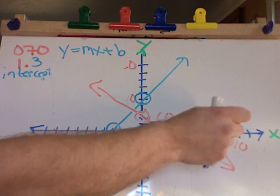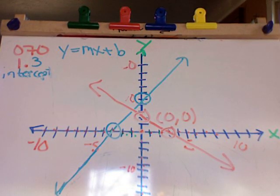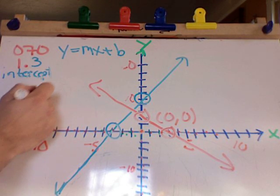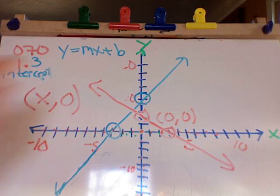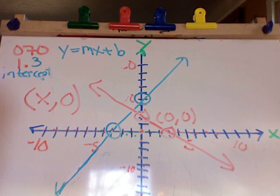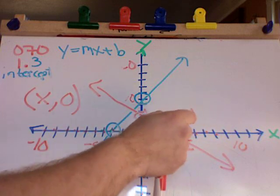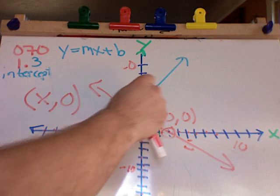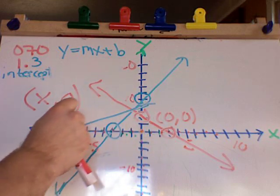So for any equation that we graph of any kind, x comma zero is the definition of your x-intercept. Because when y is zero, wherever your line is—if it's here or here, or maybe you've got a different line right there—